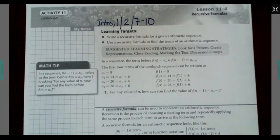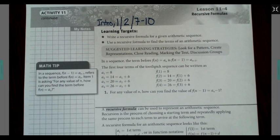Let's go ahead and take a look at our introduction. It says, in a sequence, the term before f of n equals a_n is f of n minus 1, which is equal to a sub n minus 1.